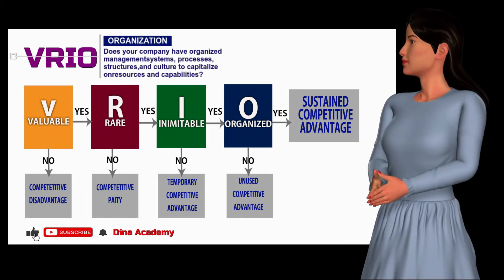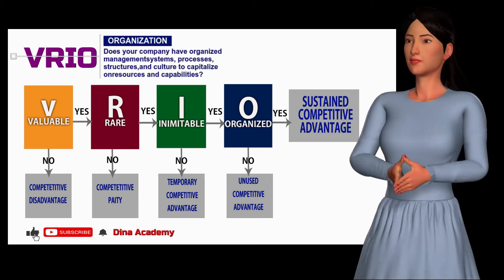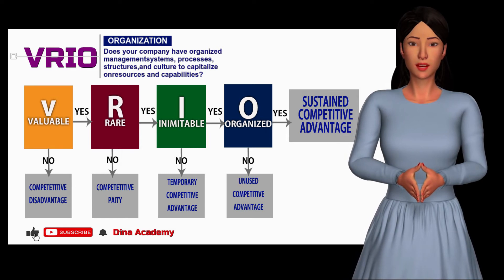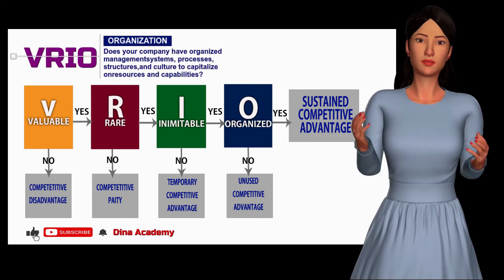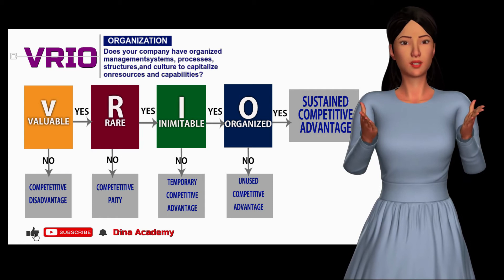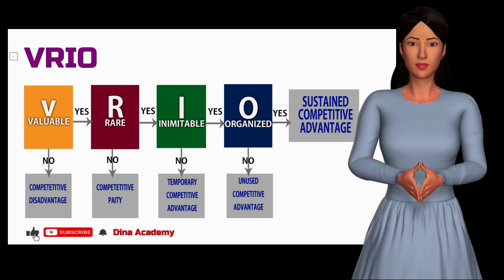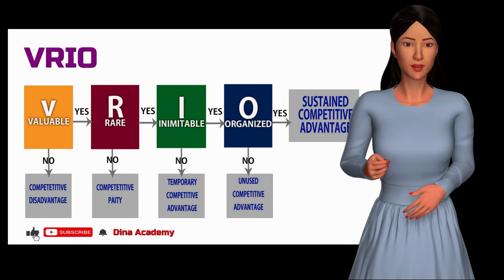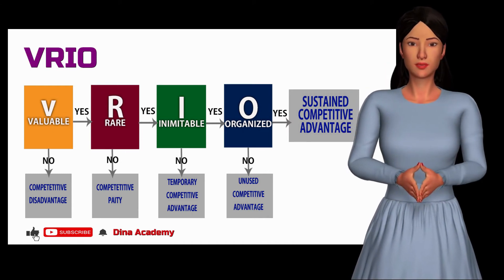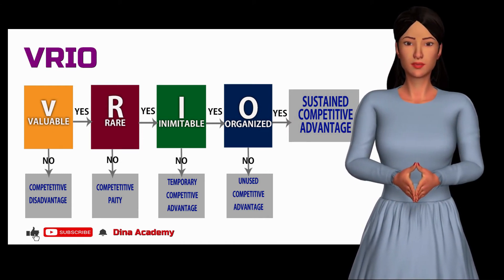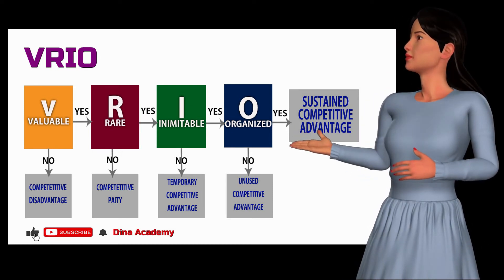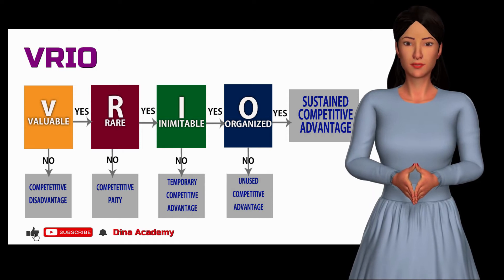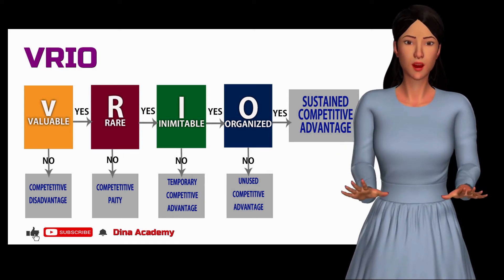Organization: Does your company have organized management systems, processes, structures, and culture to capitalize on resources and capabilities? If no, without the internal organization and support, it will be difficult to fully realize the potential of your valuable, rare, and costly-to-imitate resources. Your company will have an unused competitive advantage and will need to reassess how to attain the needed organization.